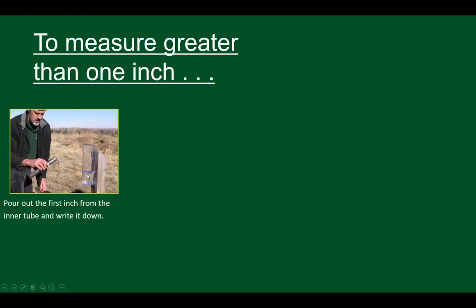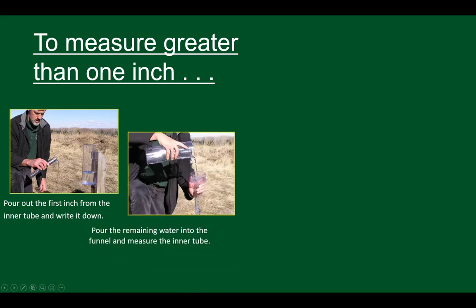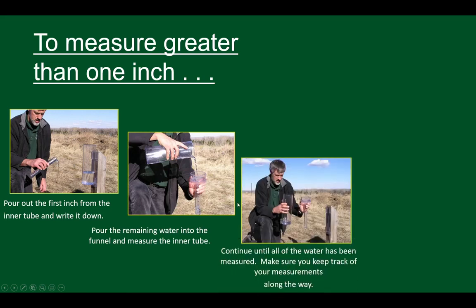In the case where it rains more than an inch, the gauge fills with more water and the inner tube fills up to one inch. You pour out that first inch, write it down, then use the funnel to pour the remaining water into the inner tube, and keep doing that until it's all emptied out. You add it all up, and that's the easy way to do it.